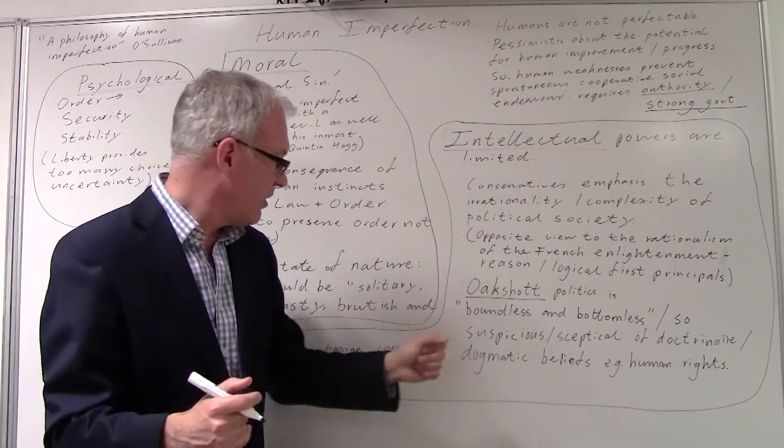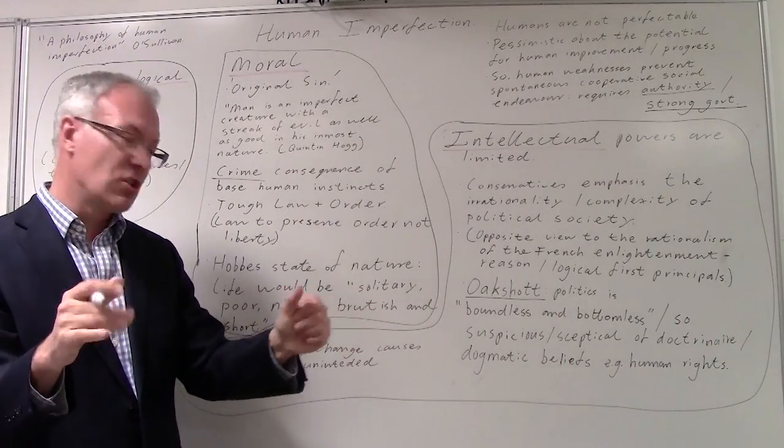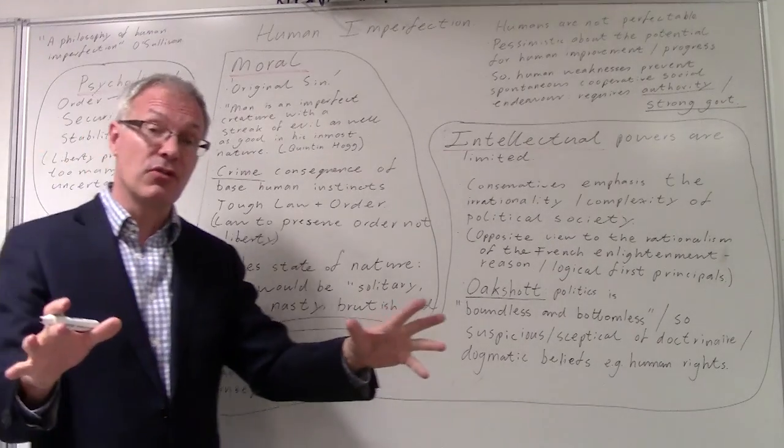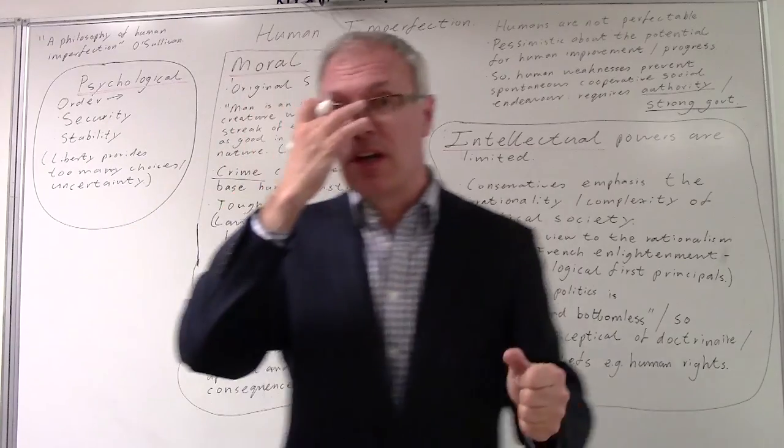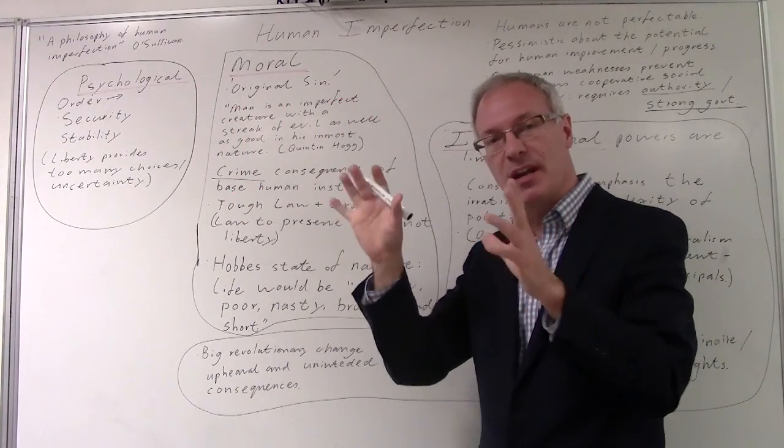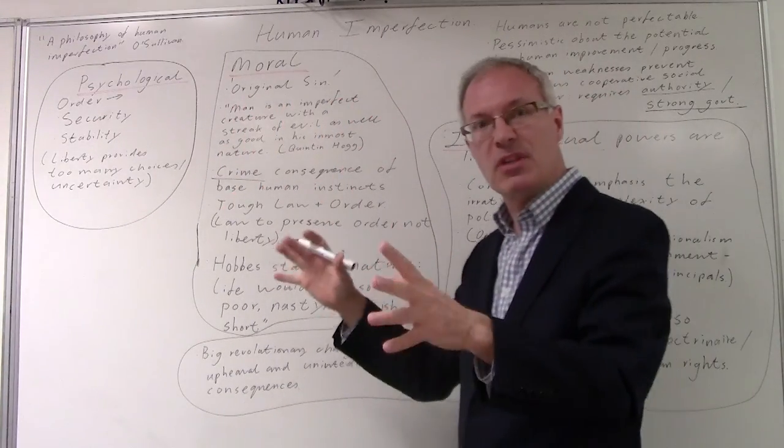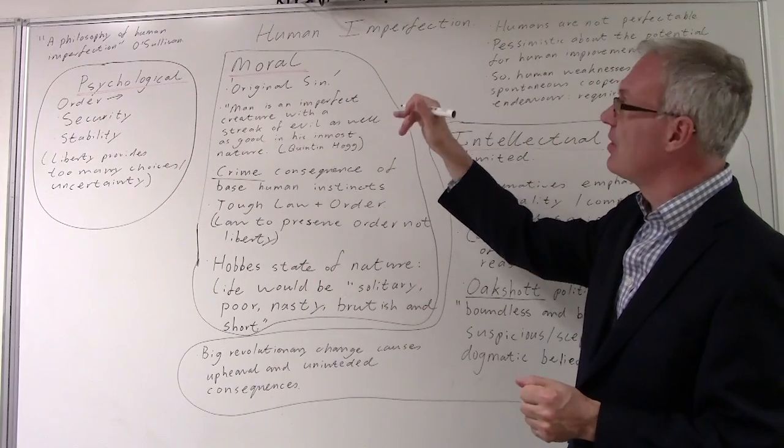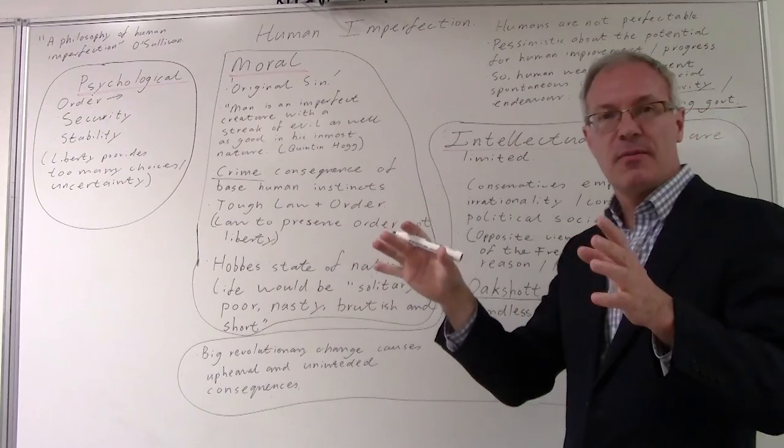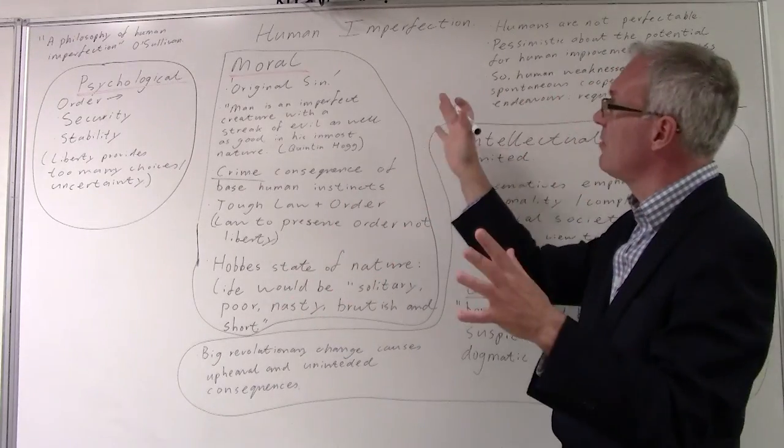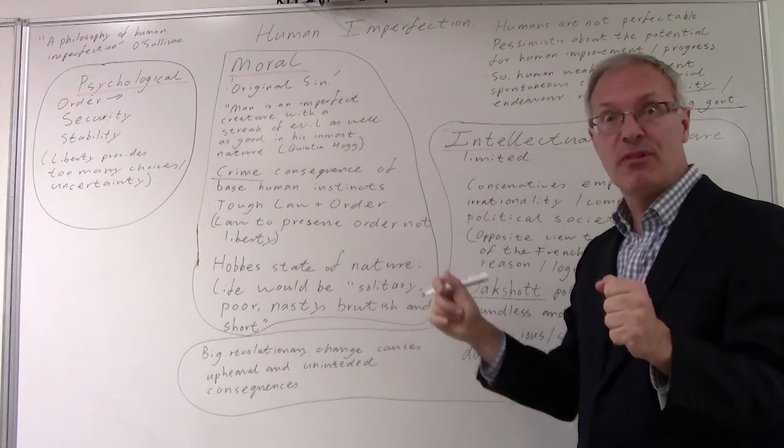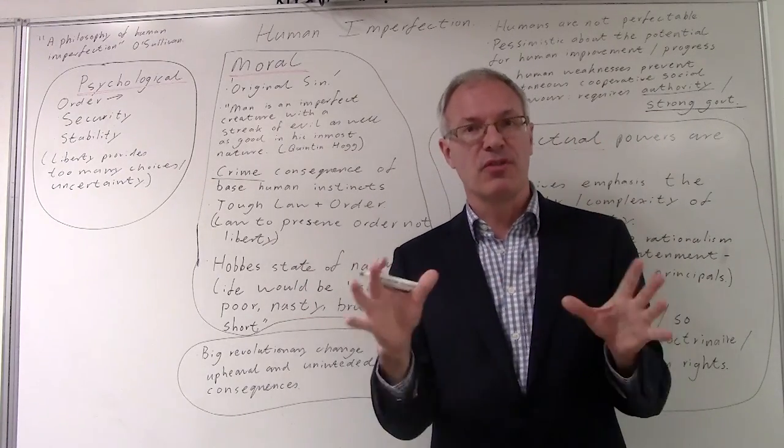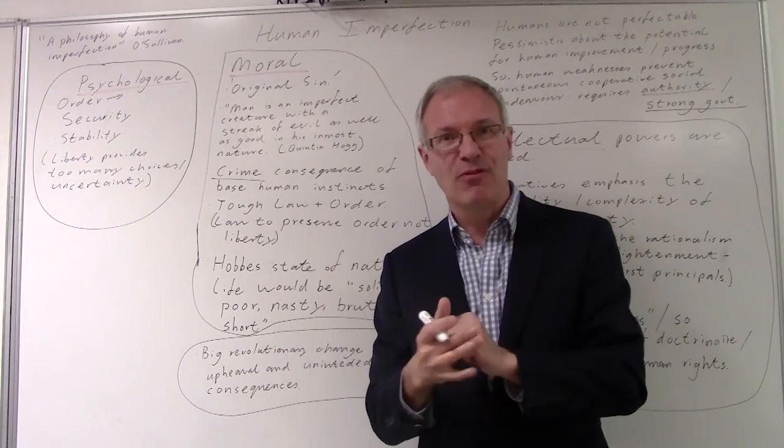They certainly think that imposing big revolutionary changes on society would cause upheaval and unintended consequences. So unlike liberalism, unlike socialism, which is optimistic about human nature, conservatives are fundamentally, they would say perhaps realistic, but certainly pessimistic about human imperfection. And this lies at the root of much conservative thinking. Thank you for watching.